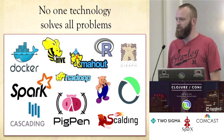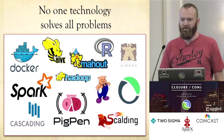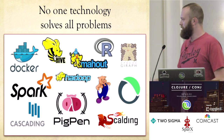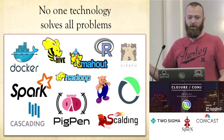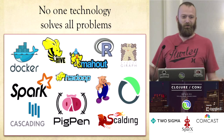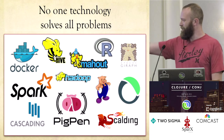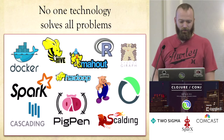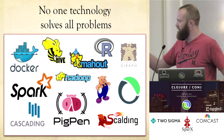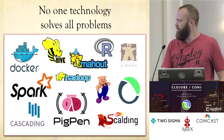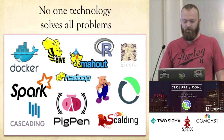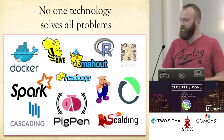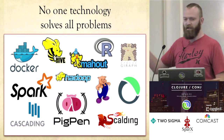Everybody has their own personal preferences. Some developers might like one thing. I prefer Pigpen, but it can't do everything. Spark is the new hotness — everybody seems to love that these days. Same with Docker. Sometimes you want more abstraction, sometimes you want the MapReduce thing, sometimes you want less.